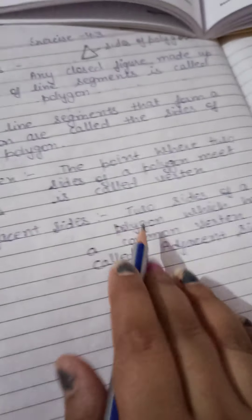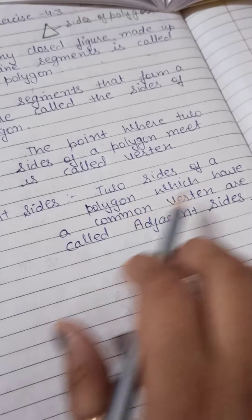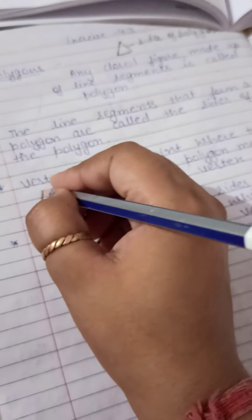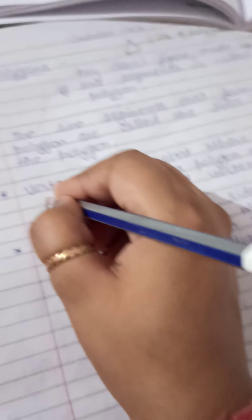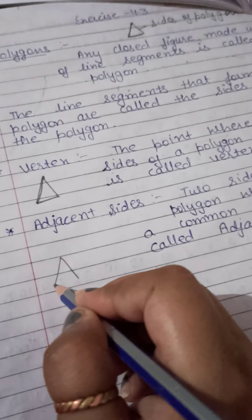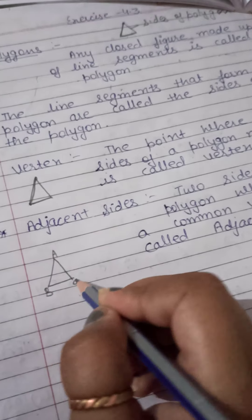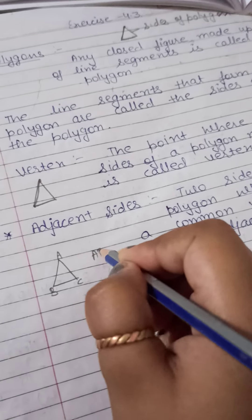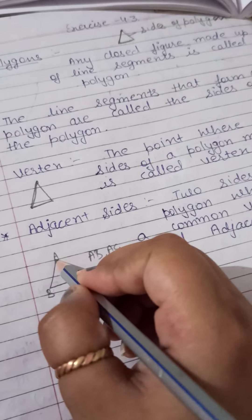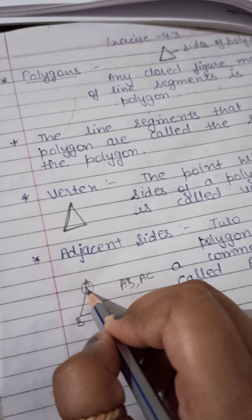Now, adjacent sides. Two sides of a polygon which have a common vertex are called adjacent sides. Like this — this is a common vertex A. Sides CA and AB both share vertex A, so A is common between both — so these are adjacent sides.